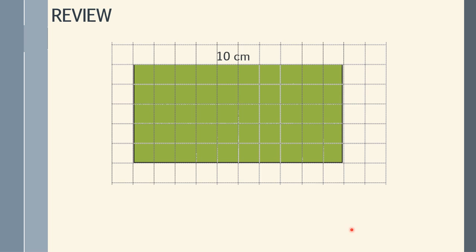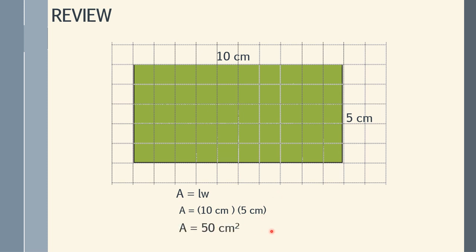In this example, we have a rectangle. The measurements are 10 cm for the length and 5 cm for the width. To get the area, you just need to multiply the length and the width. So substituting, that would be 10 cm times 5 cm, and once you multiply it, you'll get 50 cm squared.